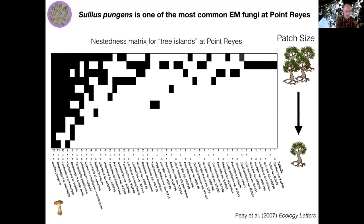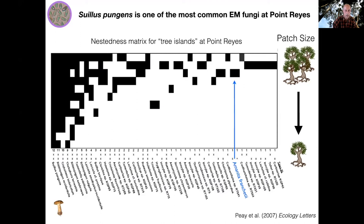Despite being a poor competitor, Suellis pungens is actually one of the most common fungi at Point Reyes in early successional settings. This nestedness diagram from a study of ten-year-old tree islands shows a matrix where columns are fungi and rows are tree patches arranged from largest to smallest. Everywhere you see a filled cell, that particular fungus occurred on that particular tree island. For example, Amanita franchetti occurred only on one large tree island, whereas Suellis pungens — far left of the figure — was present on every single tree island surveyed. The communities on smaller tree islands are a nested subset of the communities on larger ones.